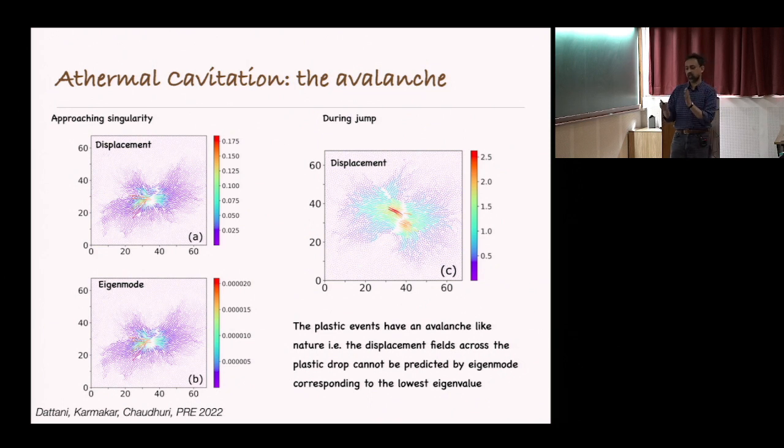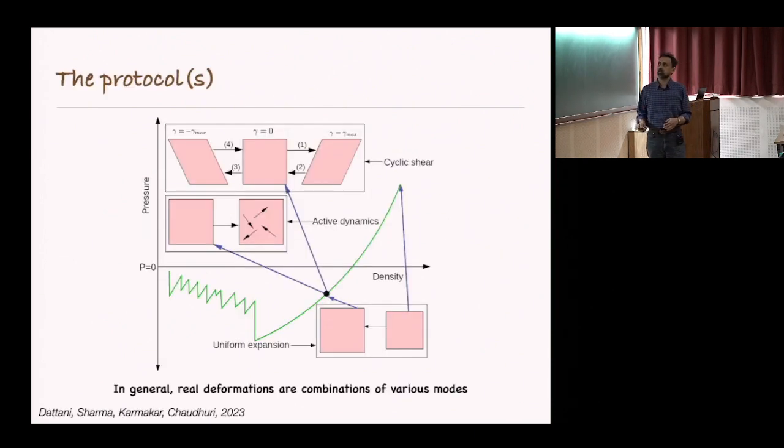Basically, as you do this isotropic expansion, the system fails via the formation of the cavity at some density. So what we do now is what we call secondary deformation. We are asking if we do a secondary deformation on the solid as the solid is being expanded, what happens to this cavitation process?